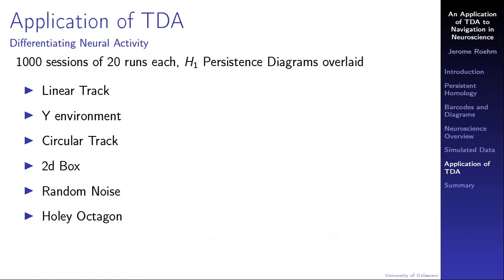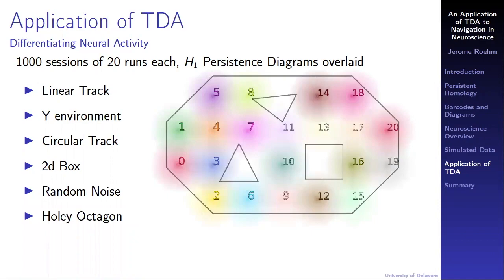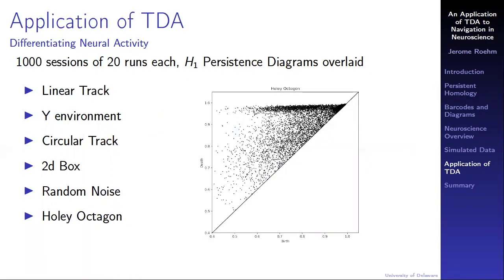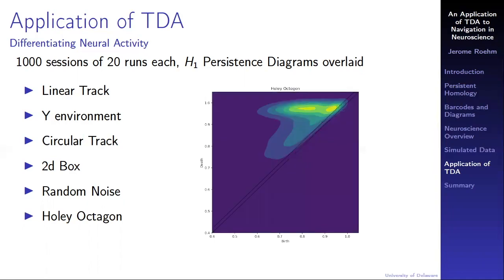Finally, after a short break, my brave rat conquered the holy octagon. There are three holes in this environment, three obstacles. This results in a clustering of points toward the top of the diagram. The signature of an animal navigating the holy octagon is in some ways a cross between a 2D box and a circular track.